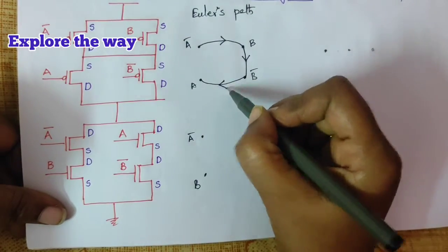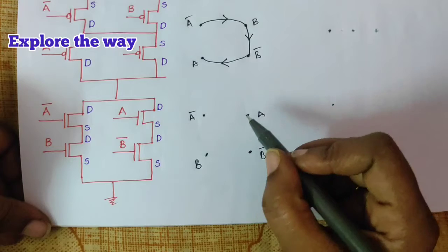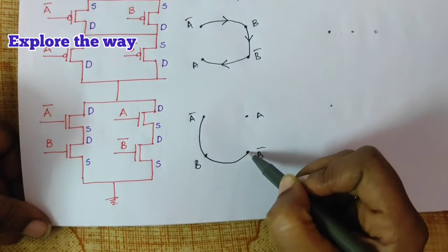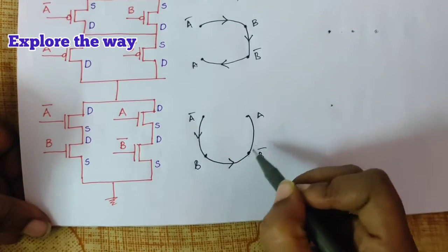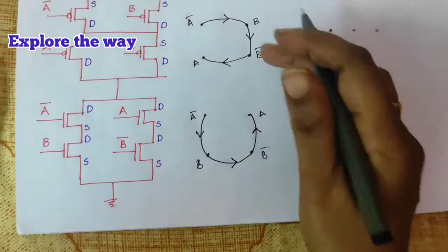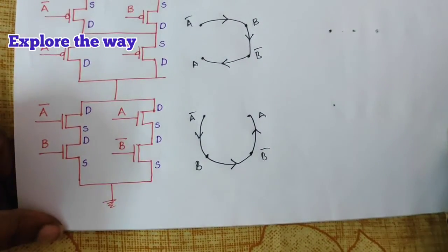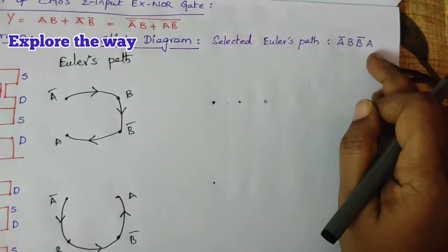Similarly, find out here. Start from a bar b, b bar a. So, this is the common path for both pull up and pull down networks. So, the selected Euler's path is a bar b, b bar a.